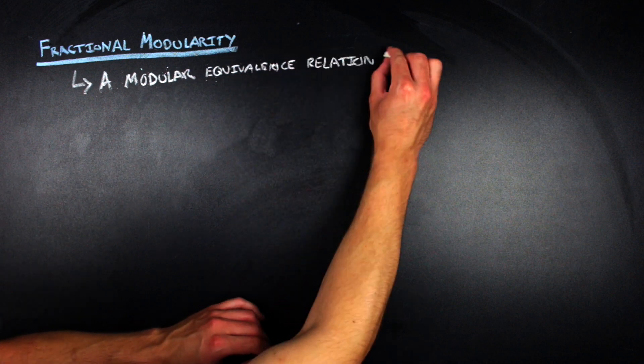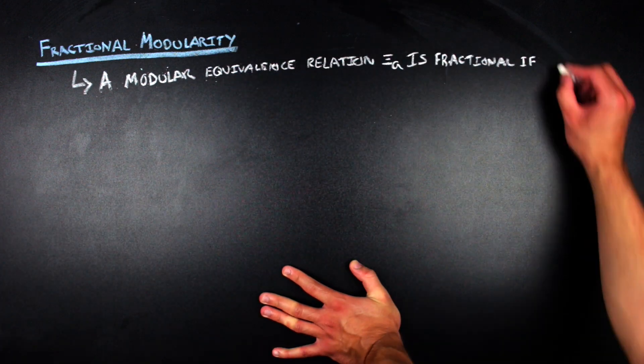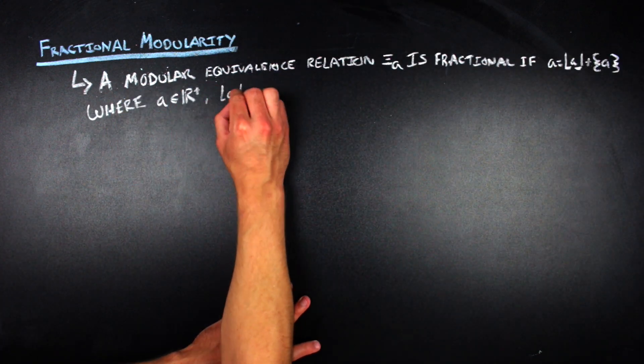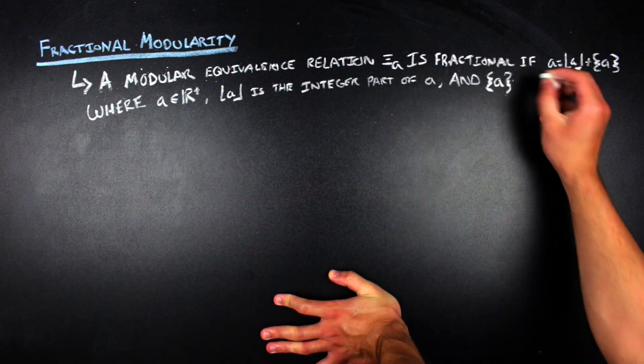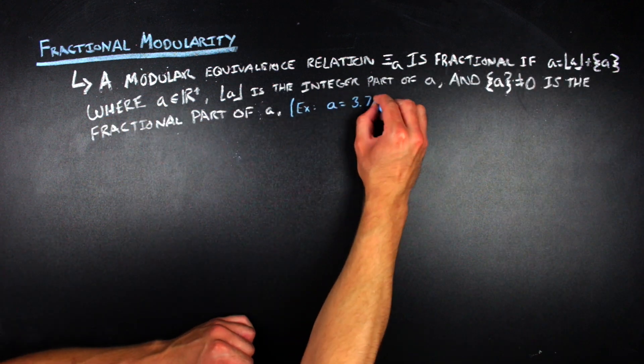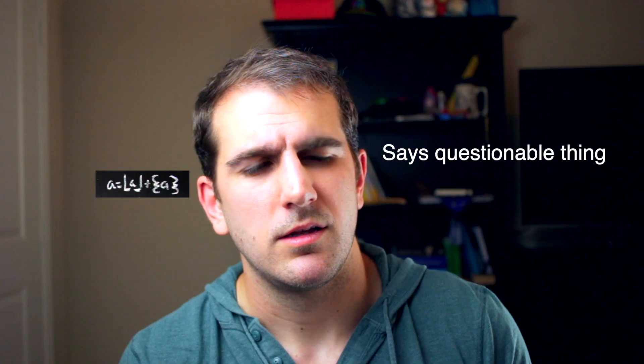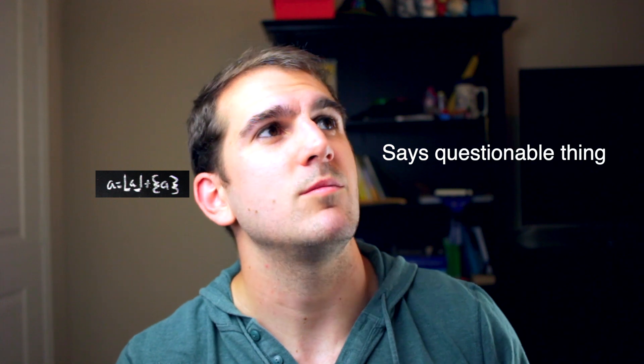I should probably define what fractional modularity is. So, fractional modularity is just a modular equivalence relation defined by some real number a such that a has a non-zero fractional part. One of the ways that you can denote this is you can say like a is equal to the floor of a plus brackets a. And in this case, those brackets are not a denotation of the set a. Rather, they're a denotation of the fractional part of a. I know it's terrible notation,